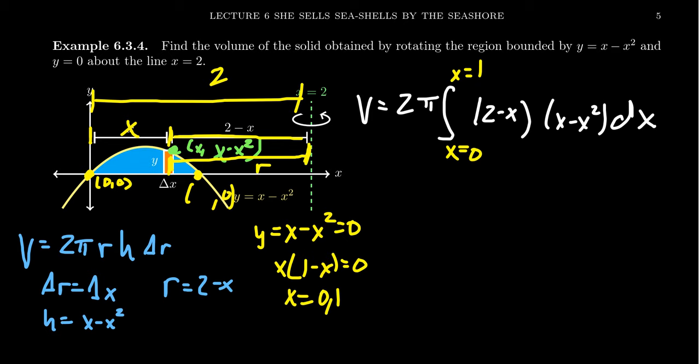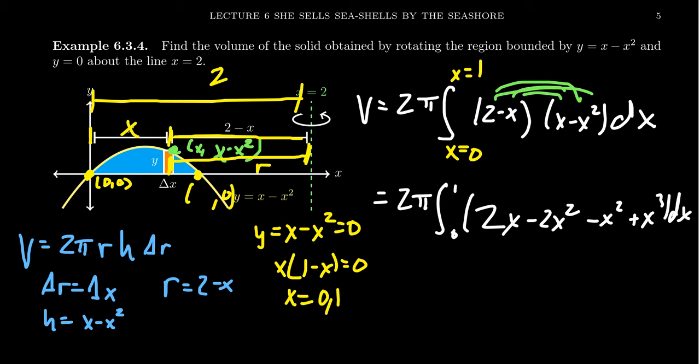In order to proceed, we're going to need to FOIL this thing out. All those possible terms. First, outside, inside, last. So with the typical FOIL, we get 2π times integral from 0 to 1. We're going to get a 2x minus 2x squared. We're going to get negative x squared and then a positive x cubed dx. There are like terms with the quadratics, negative 2x squared and then a negative x squared. Combining like terms there, we end up with a 2x minus 3x squared plus x cubed.